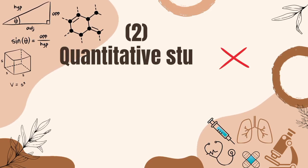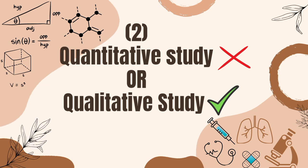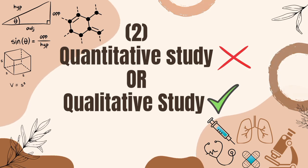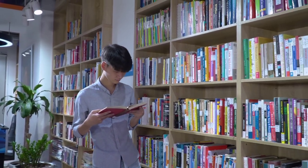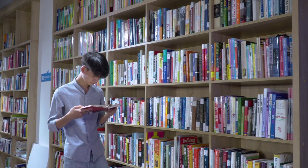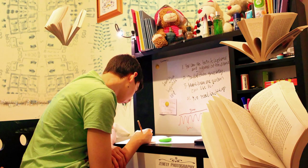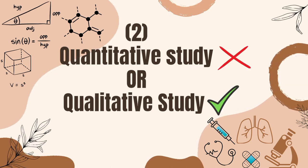Mistake number two is that students do quantitative study rather than qualitative study. With quantitative study, you only have the satisfaction that your syllabus is completed many times, but you don't think about quality. When you don't do quality study, your concepts are not strongly built up. Students who do qualitative study one or two times will have stronger concepts and can score better. That's why you should always prefer qualitative study — don't depend on quantity.